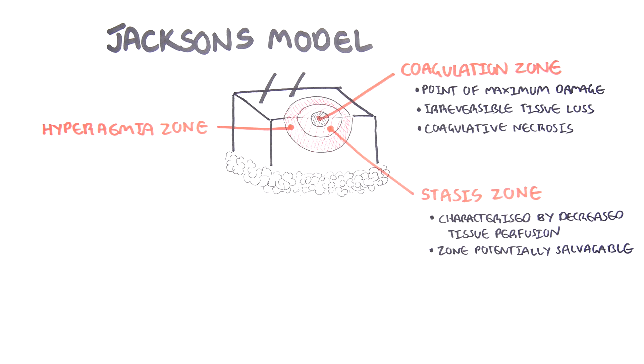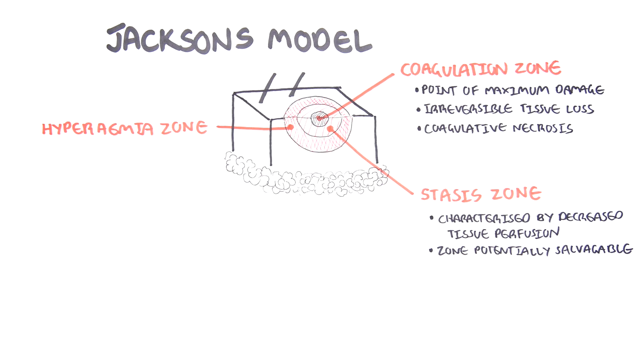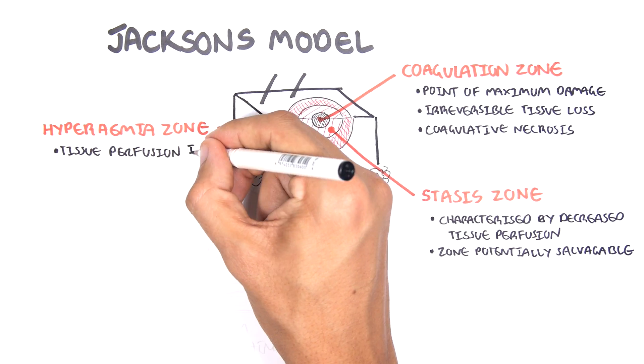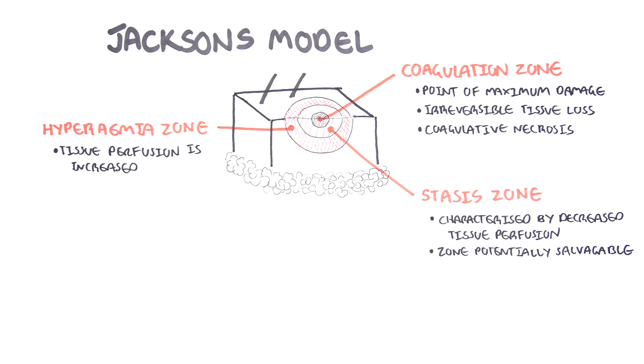At the very outside is the zone of hyperemia. In this outermost zone, tissue perfusion is increased. The tissue here is invariably recovered unless there is severe sepsis or prolonged hypoperfusion.